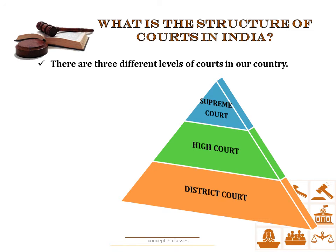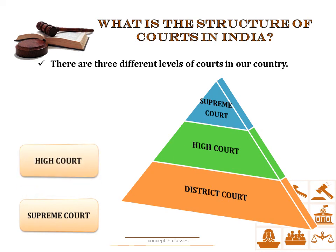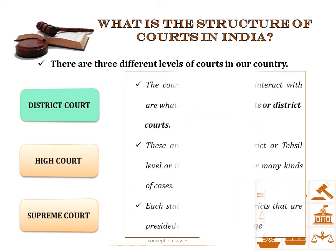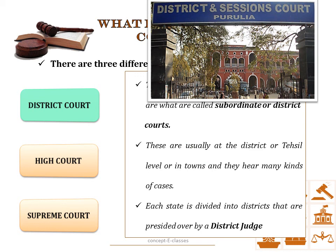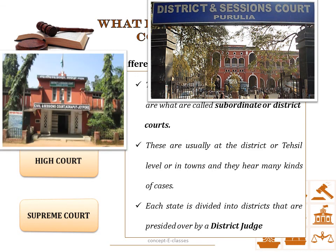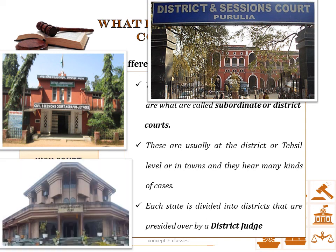Now let us discuss about the structure of courts in India. There are three different levels of courts in our country. There is only one court at the apex level — the Supreme Court — followed by the High Court, and there are several courts at the lower level which are usually called district courts. The courts that most people interact with are called subordinate courts or district courts. These district courts are usually found at a district or tehsil level or in towns and hear many kinds of cases. Some examples are district courts in Burula, Koraput, Jaipur, and Haridwar, and these district courts are presided over by a district judge.